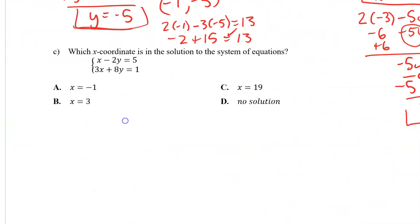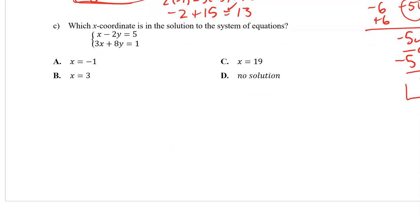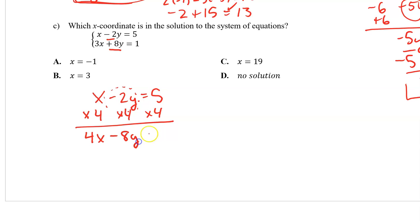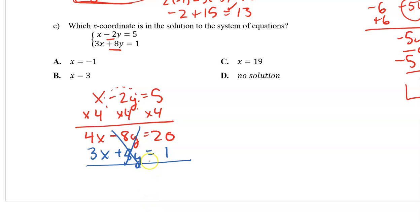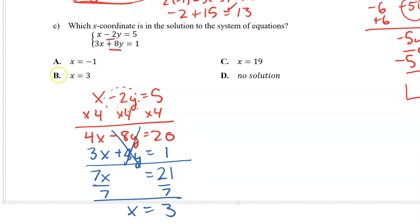Last problem: which coordinate is a solution to the system of equations? All of my answer choices involve x, so let's try to eliminate y. The first equation is x minus 2y equals 5. If I'm going to eliminate y, I need this term to be negative 8y, so I'll multiply everything by 4, giving 4x minus 8y equals 20. Then I'll take the second equation: 3x plus 8y equals 1. The y's eliminate one another. 4x plus 3x is 7x, which equals 20 plus 1, which is 21. Divide both sides by 7: x equals 3, which is answer B.